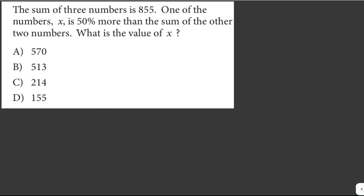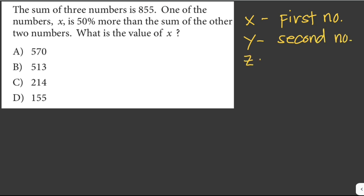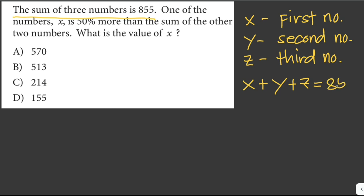It says here that one of the three numbers is x. So we let x as our first number, y our second number, and z our third number. Let's write this mathematical sentence into a mathematical equation. The sum of three numbers is 855, so we just have to add up x, y, and z. That would be x plus y plus z equals 855.